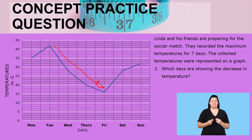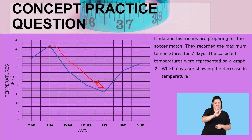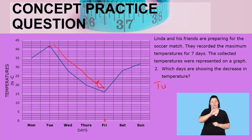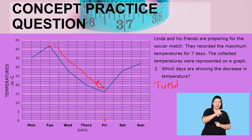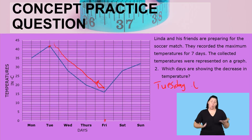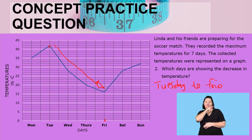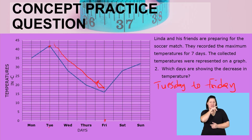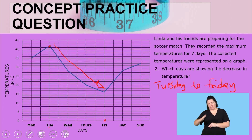Now let us have a look at the days. It means from Tuesday to Friday there was a decrease in temperature. Your answer is going to be Tuesday — you can mention all the days, or you can say Tuesday to Friday, and you are still right. Or you can say Tuesday, Wednesday, Thursday, and Friday. Those are the days which were showing the decrease in temperature.